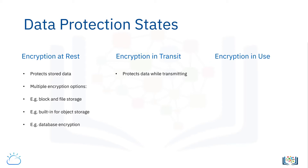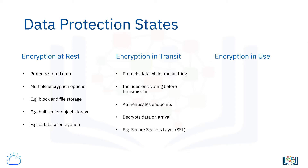Encryption in transit protects data while it is transmitted from one location to another. Encryption in transit includes encrypting the data before transmission, authenticating endpoints, and decrypting and verifying data on arrival. Secure sockets layer, or SSL, and transport layer security, TLS, are commonly used protocols for encryption in transit. They are not only used when accessing websites securely, but also for data moving between servers and services within the cloud.